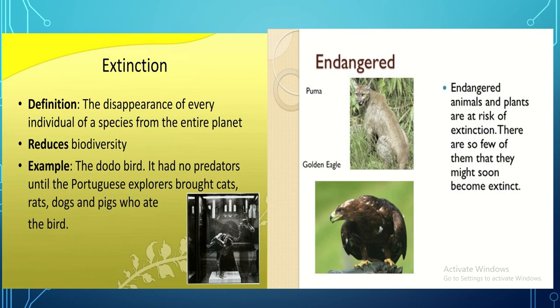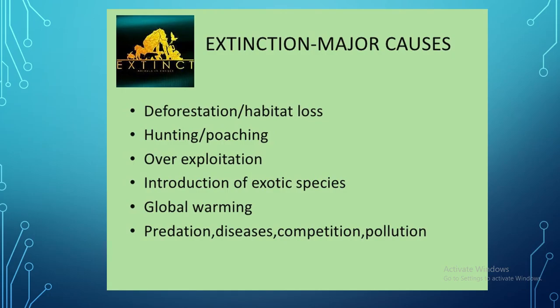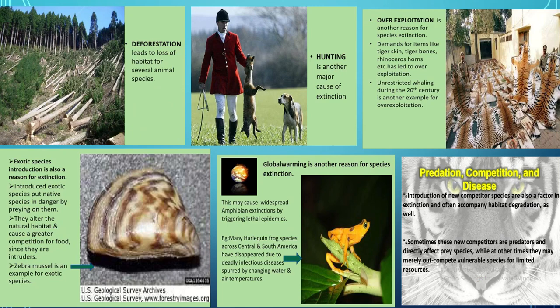Now the subtopic: extinction and endangered species. Extinction is the disappearance of every individual of a species from the entire planet — a common example is the dinosaurs. Endangered species are those at risk of near-extinction, such as the puma and golden eagle. Major causes of extinction include man-made factors: deforestation or habitat loss, hunting, over-exploitation of species, introduction of exotic species into native habitats, and global warming.